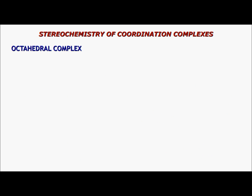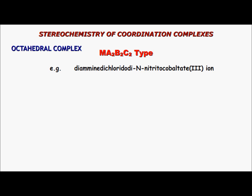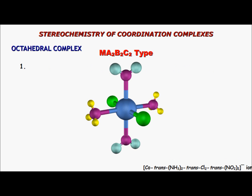Next comes the MA2B2C2 type — for example, diamine dichlorido dinitrito cobaltate(III) ion — which has five geometric isomers. The first geometric isomer has amine, chlorido, and nitrito all in the trans position, and this isomer has a plane of symmetry.